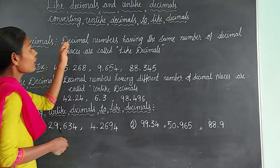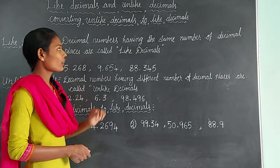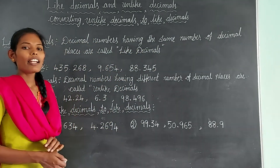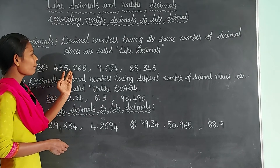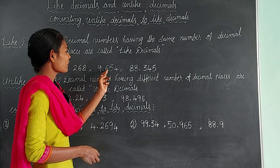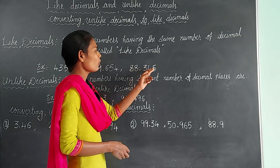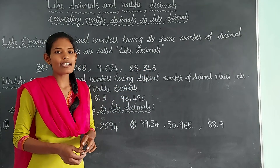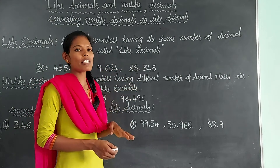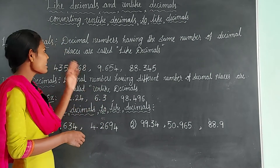First, let us know about like decimals. Decimal numbers having the same number of decimal places are called like decimals. Let us see the examples. In 435.268, there are 3 decimal places. And 9.654 has 3 decimal places. And 8.345 has 3 decimal places. Observe these 3 decimals — they have the same number of decimal places, so these type of decimals are known as like decimals.